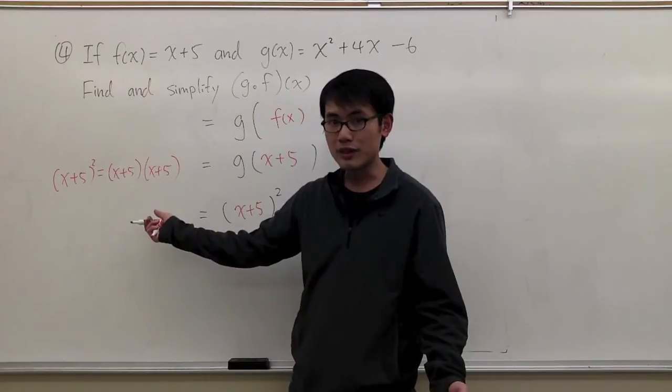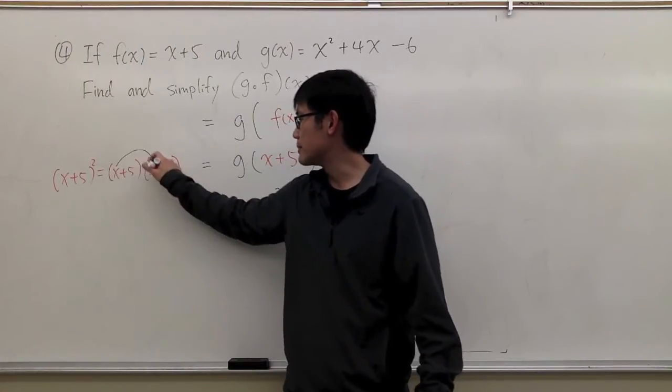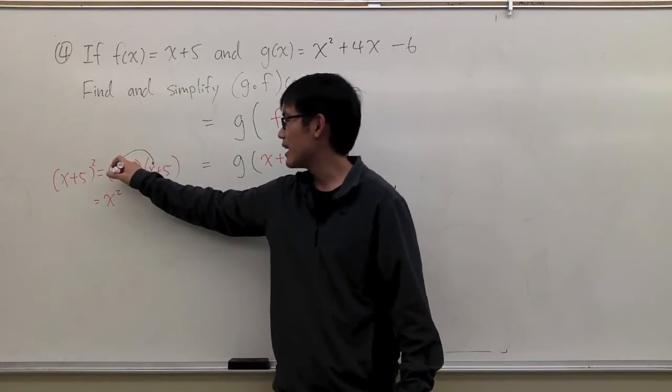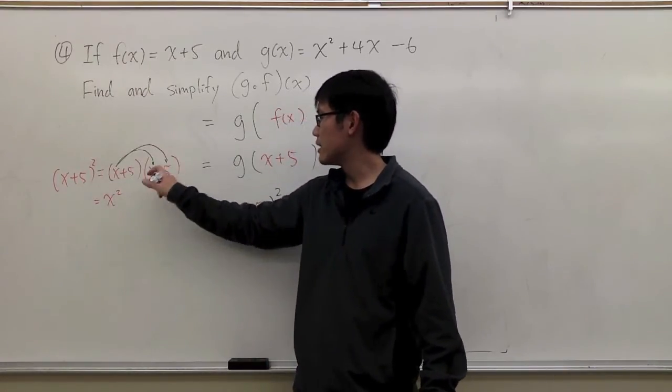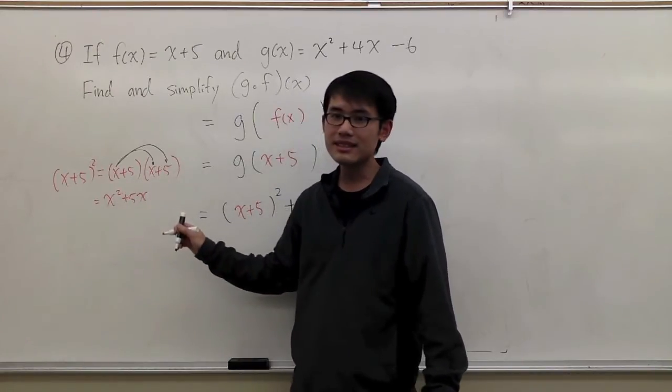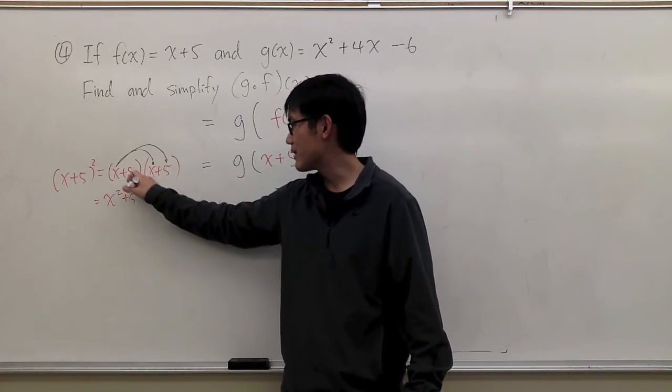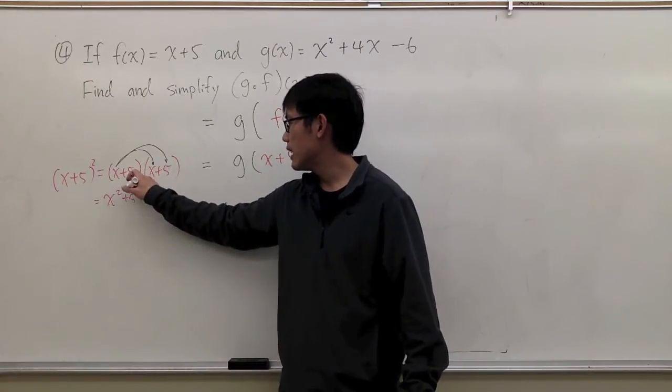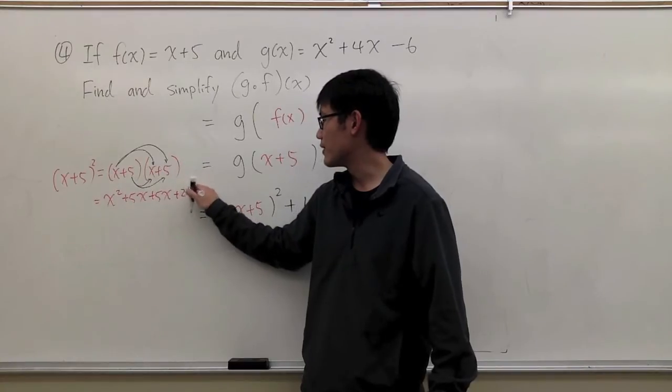And I'm going to FOIL this out. I have to do x times x. I will get x squared. And then I will get x times 5, which will be 5x. And then we also have this 5 times x plus another 5x. And 5 times 5 will be plus 25.